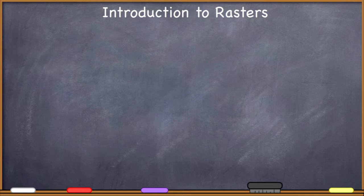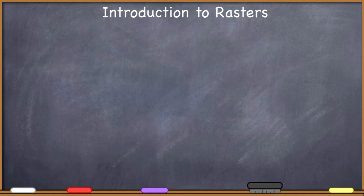We're going to get into it in some detail here, but I'd like to start off talking about rasters by showing a few maps that people are very familiar with and see a lot of, pointing out the vector data that you see, but then also this new kind of data — the raster data. So here they are.